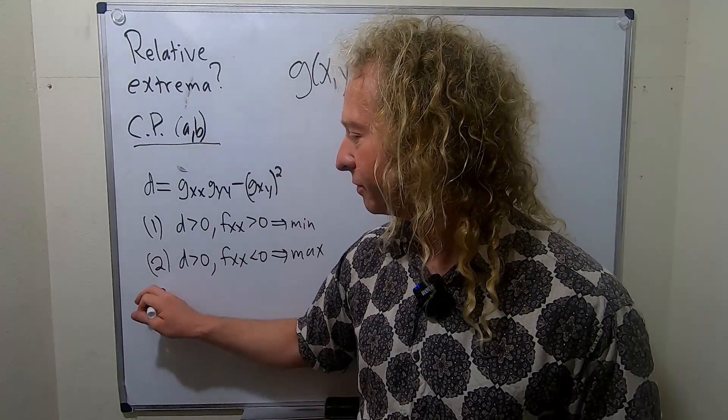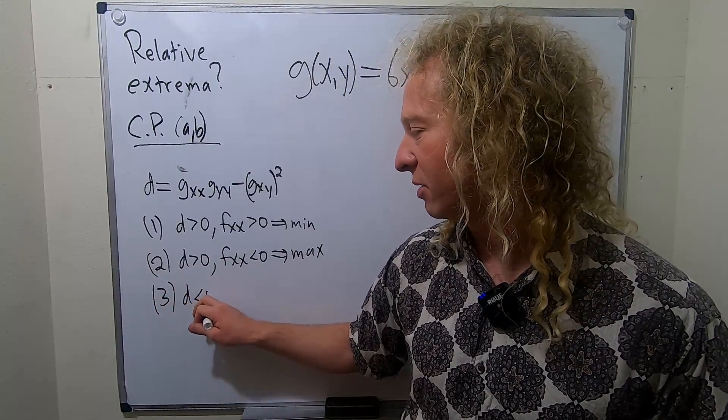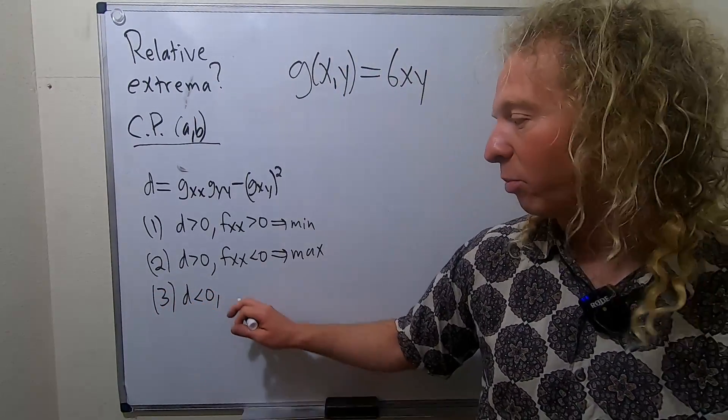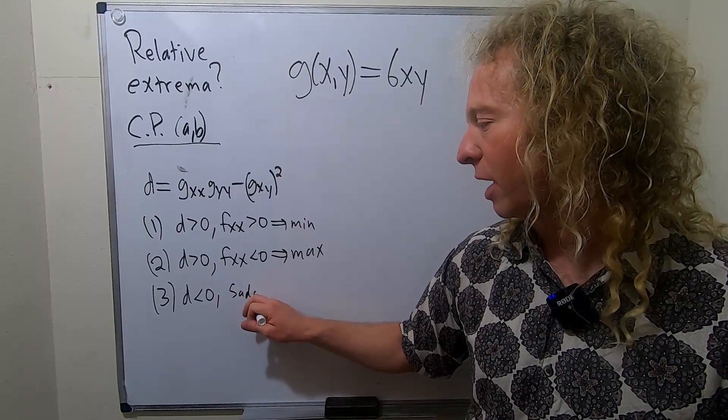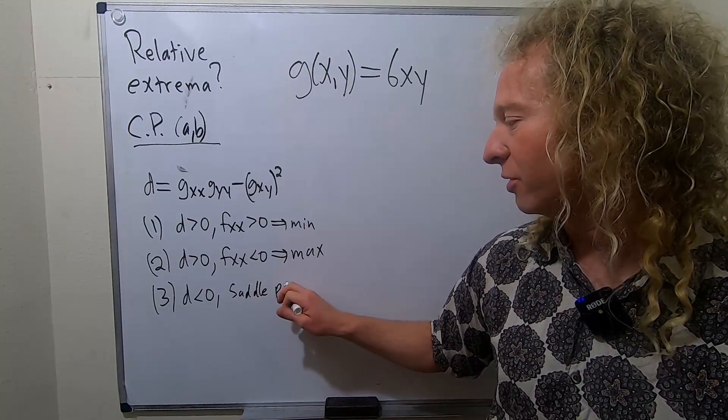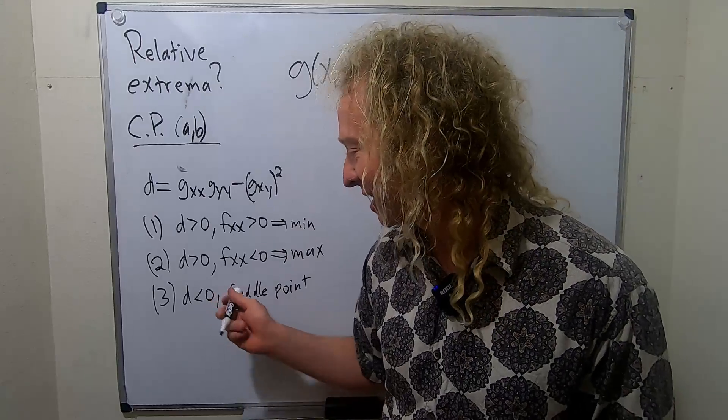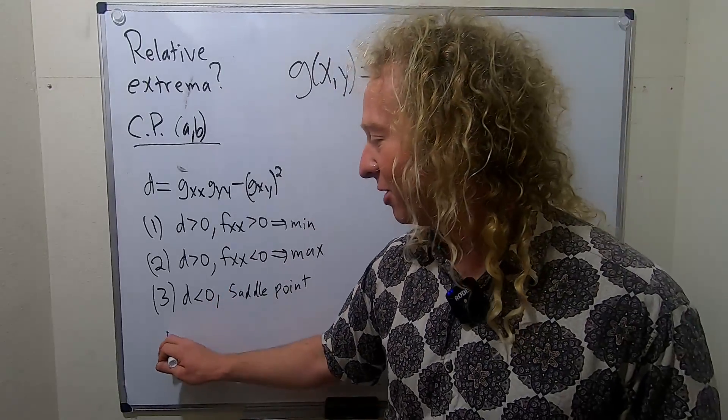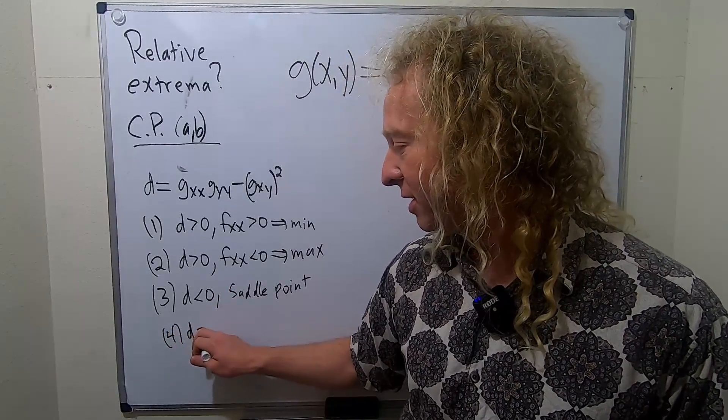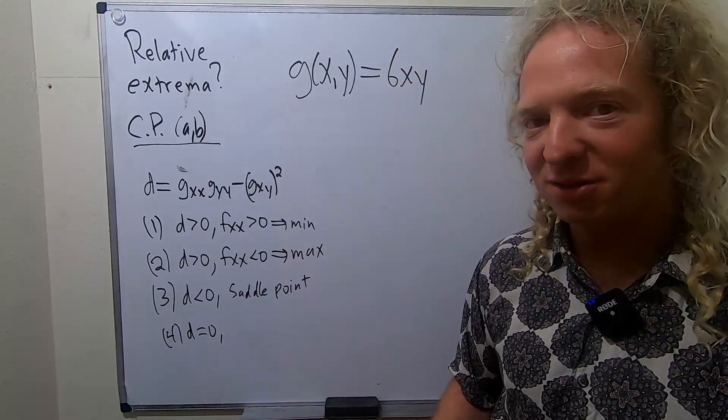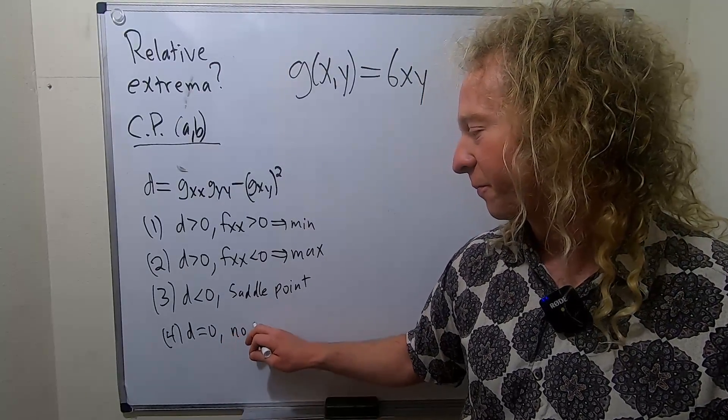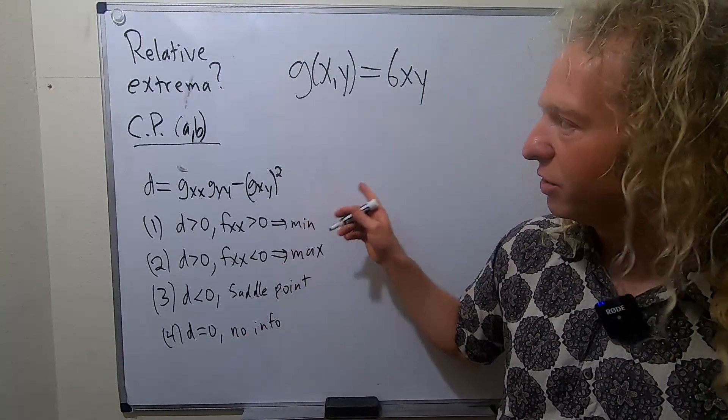Case three, D is less than zero. In this case, you have a saddle point. It's called a saddle point because if you look at a 3D graph, it actually looks like a horse's saddle, hence the name saddle point. And the worst case is case four. If D is equal to zero, then no information. So this is the test we're going to use in this problem.